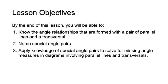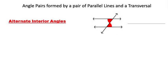Let's look at our first set of parallel lines and a transversal that passes through them. We have a pair of angles denoted here in red. These are called alternate interior angles. They are on the inside of the parallel lines — thus interior angles — and they are on alternating sides of the transversal: one is high, one is low; one is on the left, one is on the right. Alternate interior angles are congruent, or equal in measure.